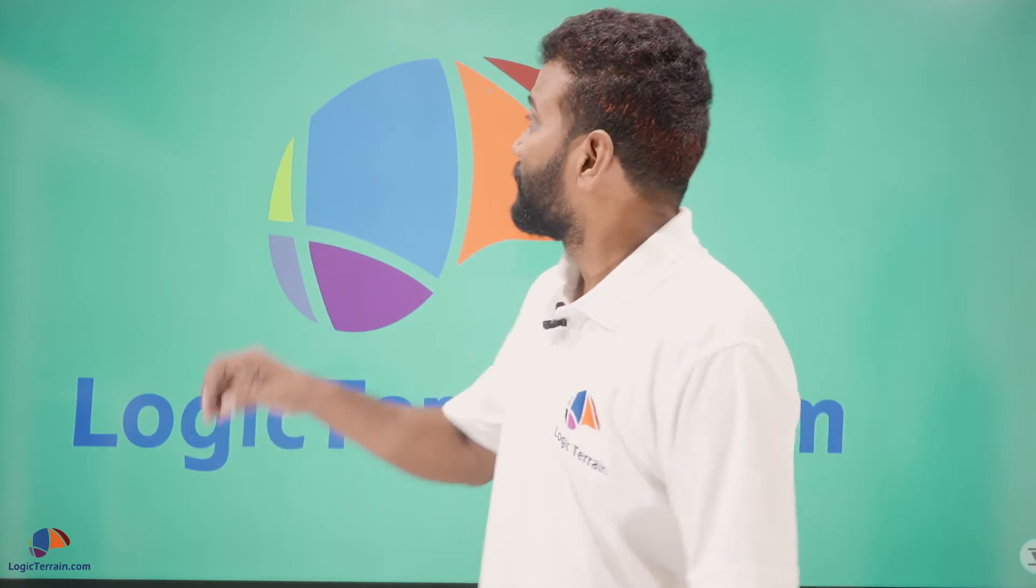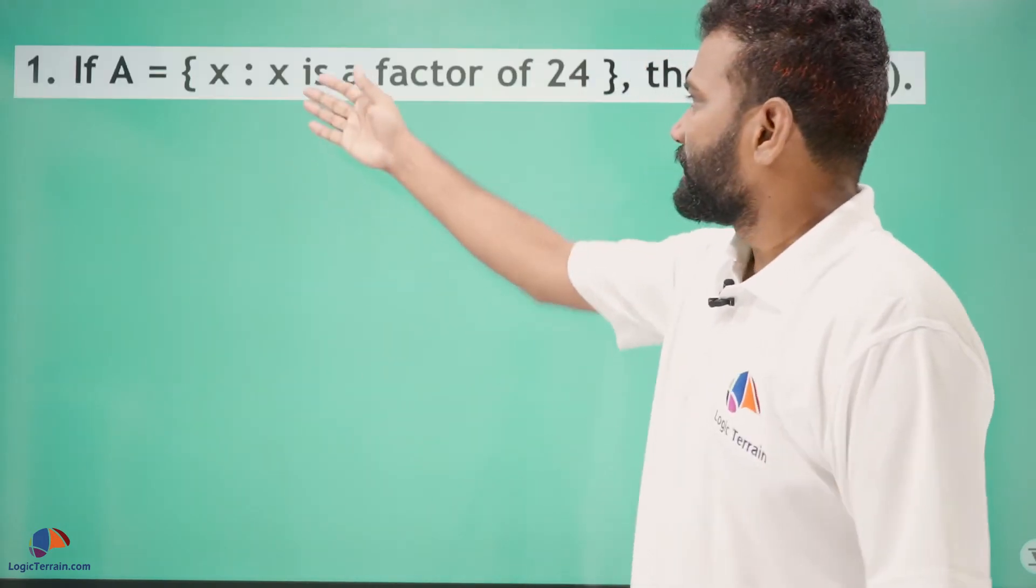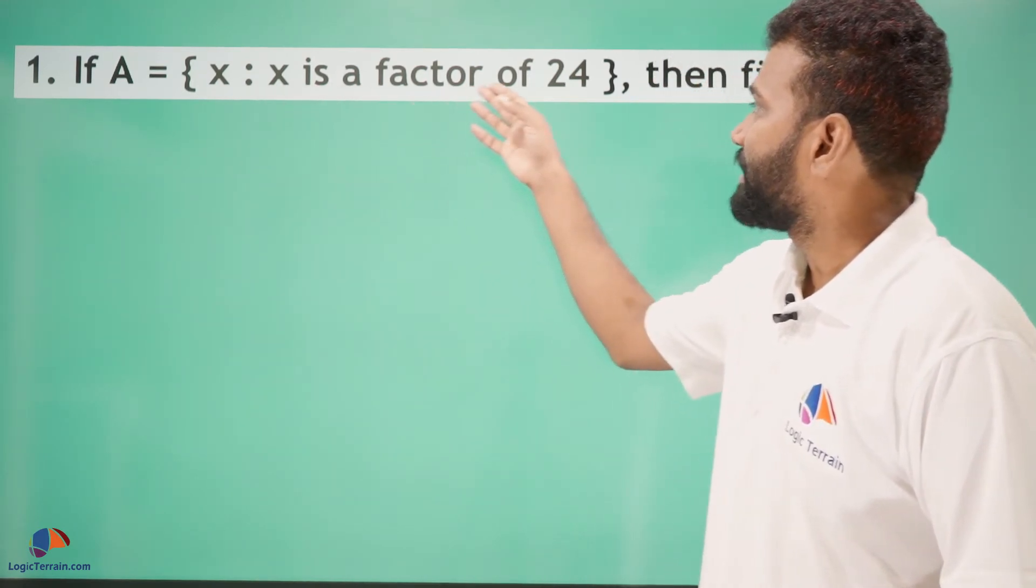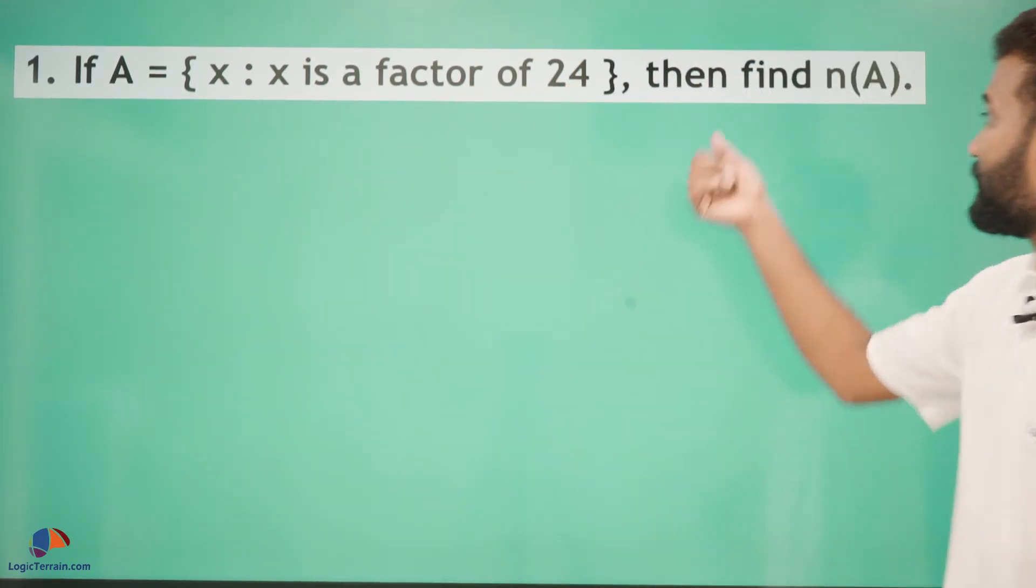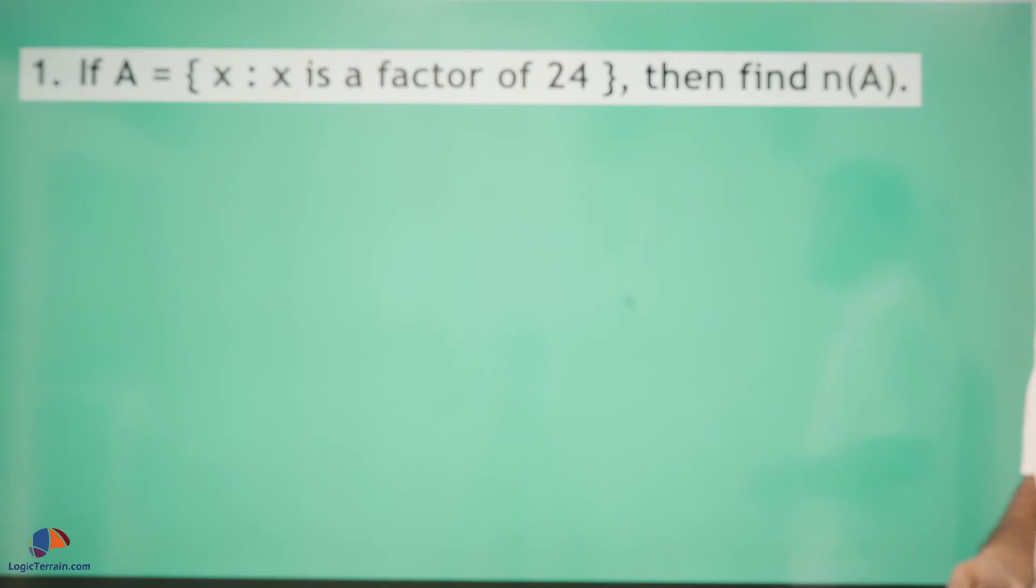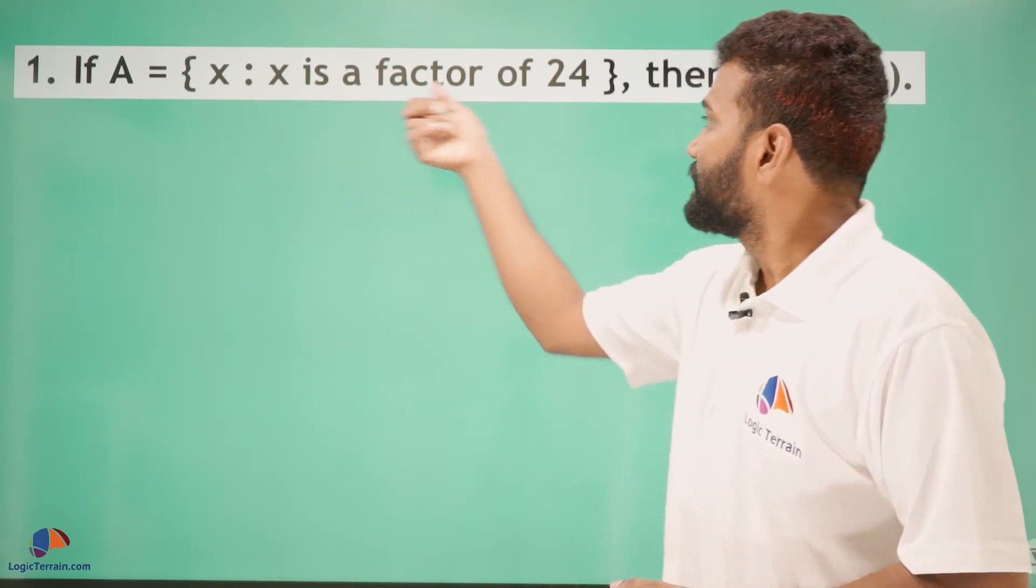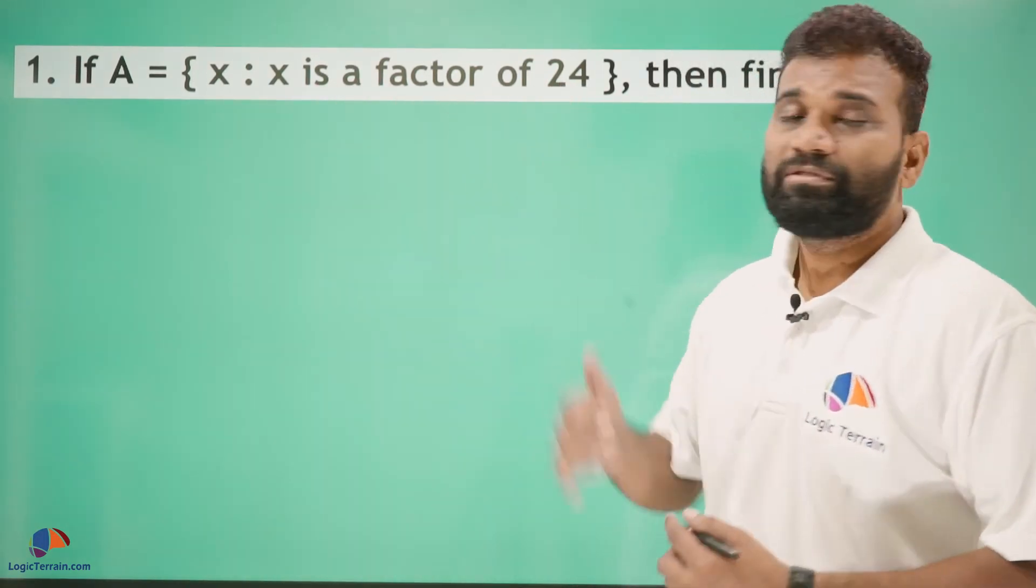Let us have a look. Here is the question: If A = {x : x is a factor of 24}, then find n(A), which means we need to find the number of elements in A. What is A? A is a set which is the factors of 24.